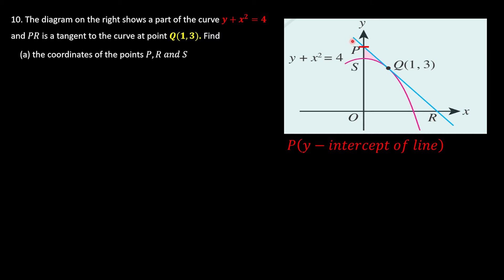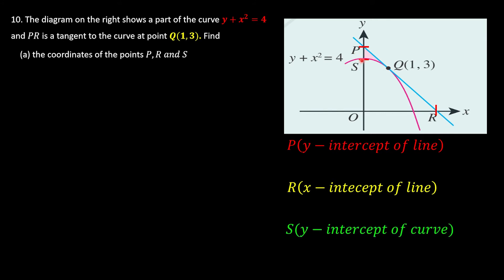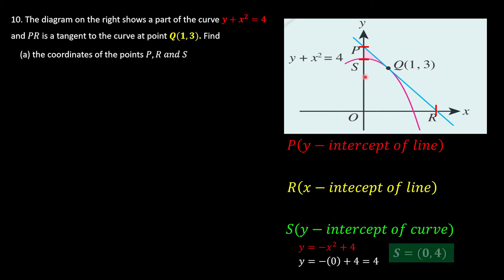We don't yet have the equation of the line. R is the x-intercept of the line, so we still need the equation of the line first. S is the y-intercept of the curve. We do have the equation of the curve: y = -x² + 4. To find the y-intercept, we set x = 0, so when x = 0, y = 4. The coordinate of S is (0, 4).